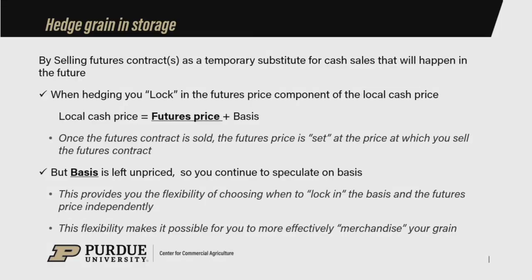One alternative — not the only alternative — is to hedge the grain that's in storage. We want to look at using the sale of a futures contract as a temporary substitute for a cash sale that's going to happen in the future — that's really the definition of hedging. When you hedge, you lock in the futures price component of the local cash price equation: local cash price equals futures price plus basis. When you sell the futures contract as that temporary substitute, you have effectively locked in the futures price component. But you're open on basis — basis is unpriced. You are effectively still a basis speculator, hoping that basis is going to become more positive, or rise, over the course of the storage season.